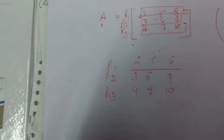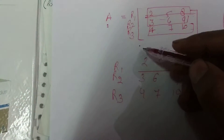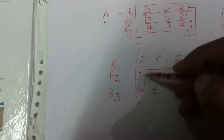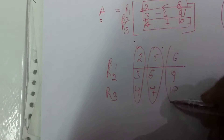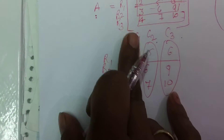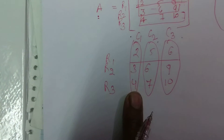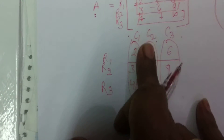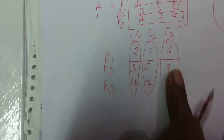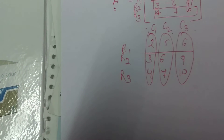If we talk about columns, these are the vertical lines. This is our column — this is C1, this is C2, and this is C3. So column 1, column 2, and column 3.